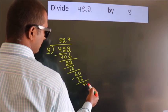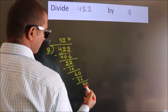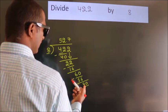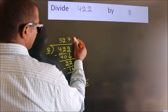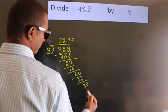So directly take 0. So 40. When do we get 40 in the 8 table? 8 fives, 40.